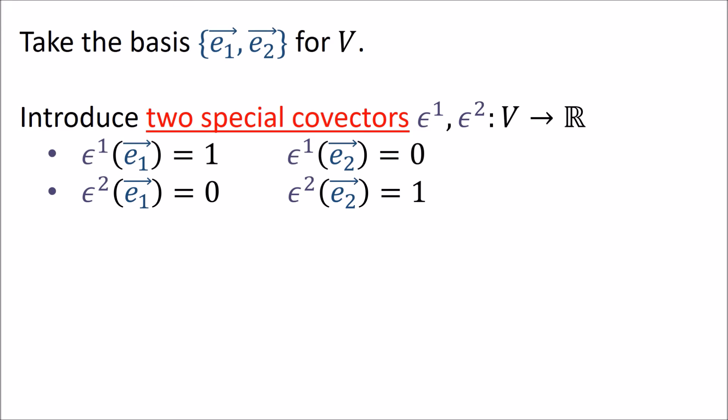These covectors are defined as follows: when epsilon 1 acts on e₁ we get 1, and when epsilon 1 acts on e₂ we get 0. When epsilon 2 acts on e₁ we get 0, and when epsilon 2 acts on e₂ we get 1.